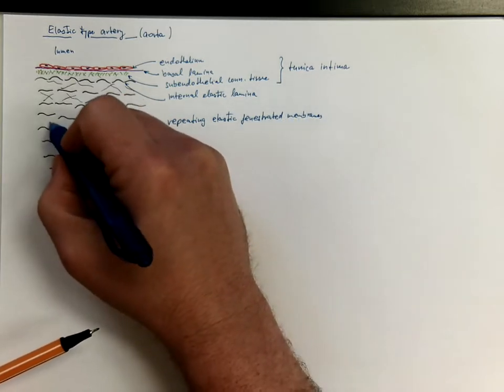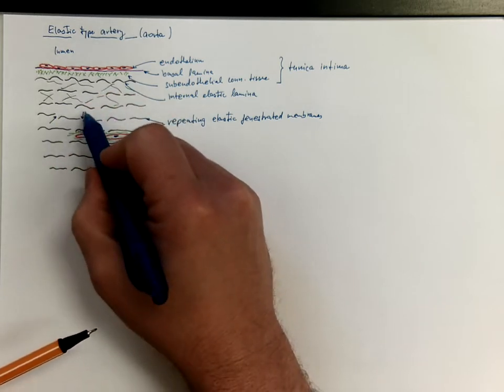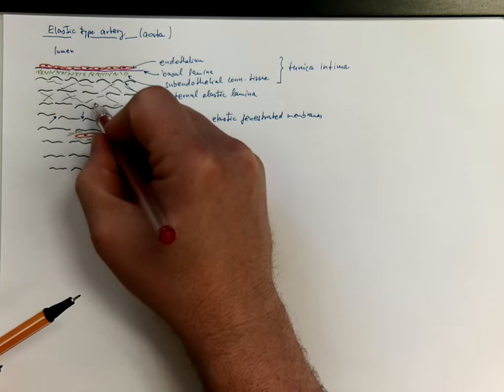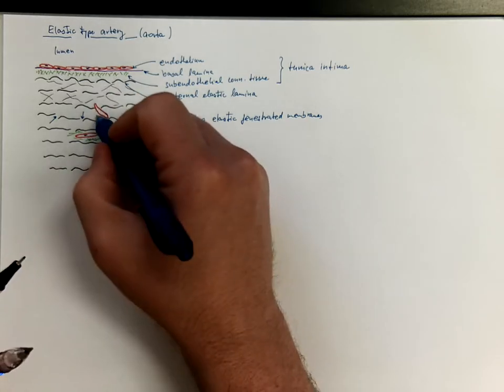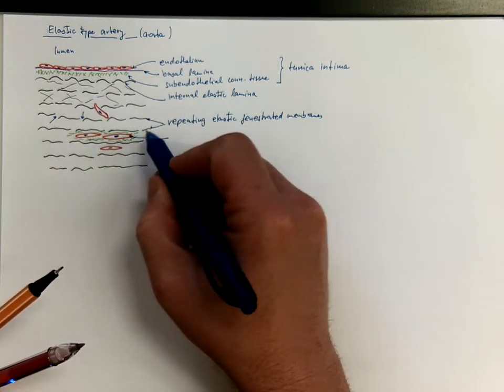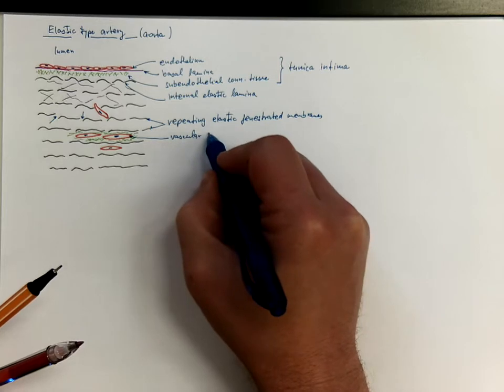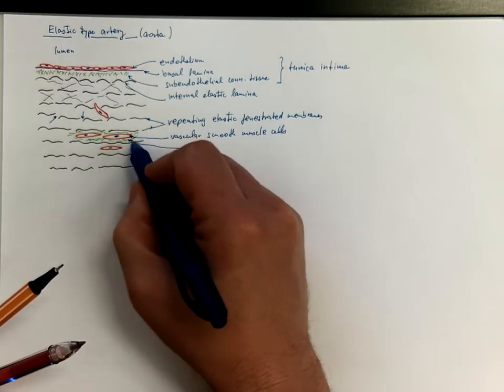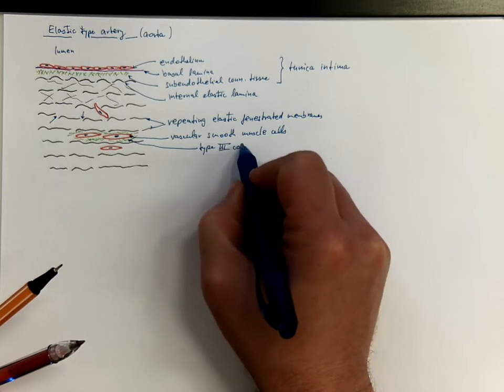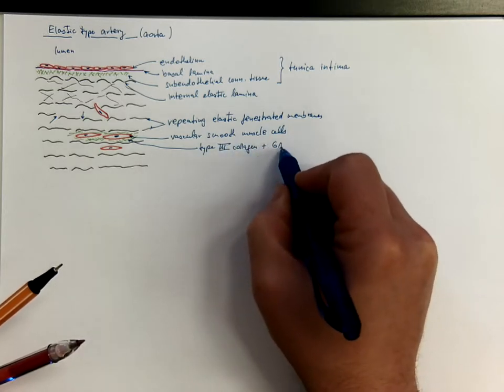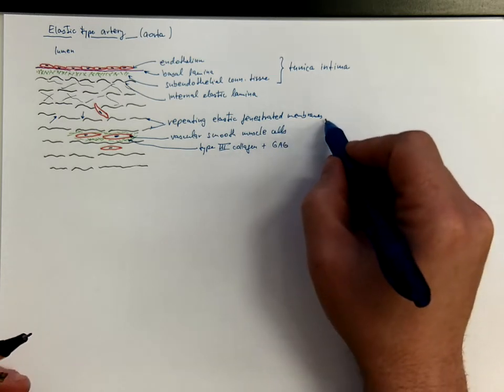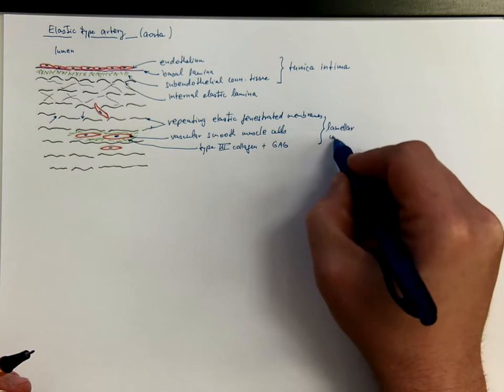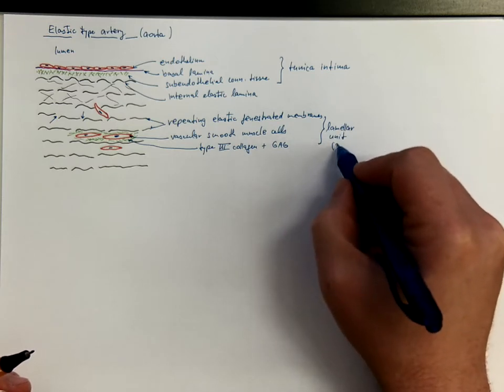These fenestrations are the openings here that facilitate the diffusion of metabolites across the vascular wall and also penetrated by the cells, such as the vascular smooth muscle cells. So then we got the vascular smooth muscle, the type III collagen plus the glycosaminoglycans of the matrix. And this together makes a sandwich-like structure called lamellar unit, with a thickness ranging between 30 to 40 micrometers.